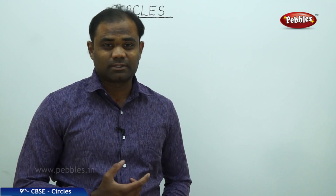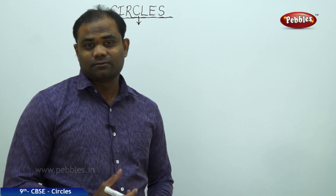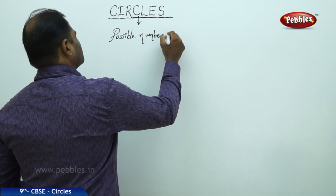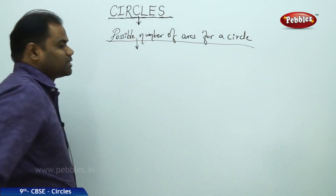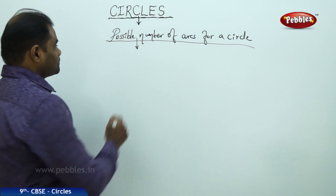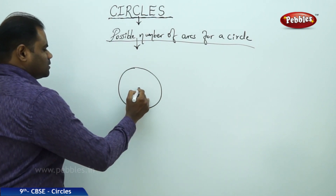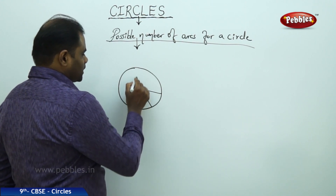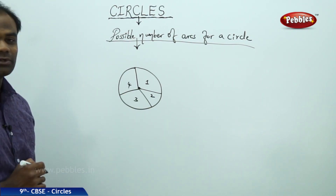Since there can be different numbers of arcs, let us investigate the possible number of arcs for a circle. Let us take a circle and imagine cutting it like a pizza into different pieces. Say I cut it into four different-sized pieces — one, two, three, four — giving four pieces of pizza.